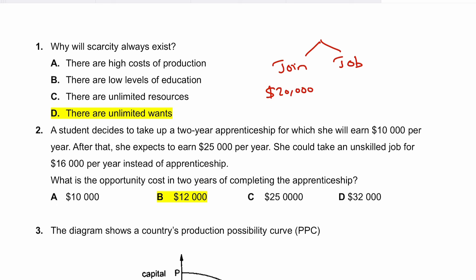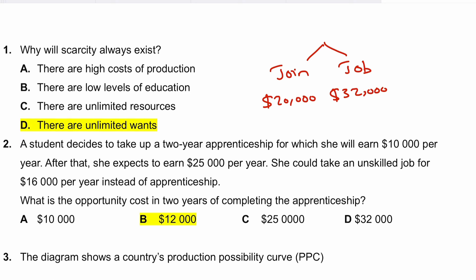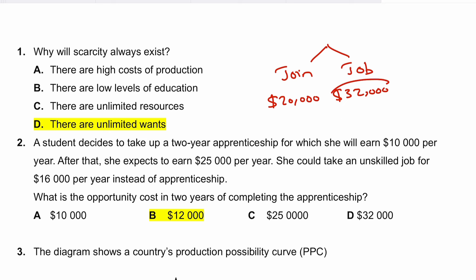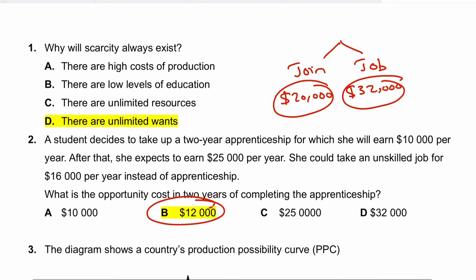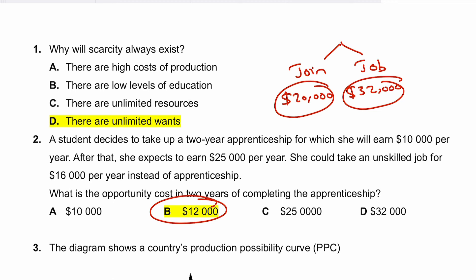If she works as an unskilled worker instead, she would earn $32,000 over two years. The opportunity cost is not the entire $32,000 she forgoes, because she recovers $20,000 from the apprenticeship earnings. So the opportunity cost is the difference — $12,000 — which is the net benefit forgone by completing the apprenticeship program.